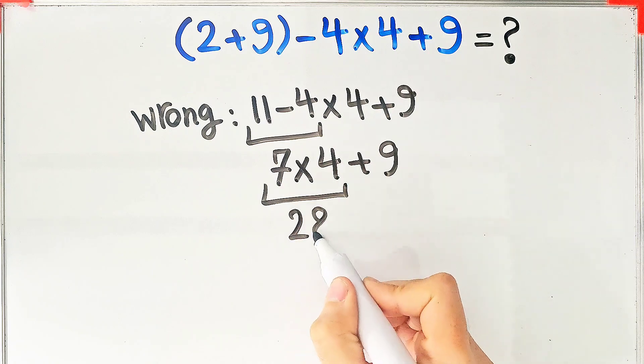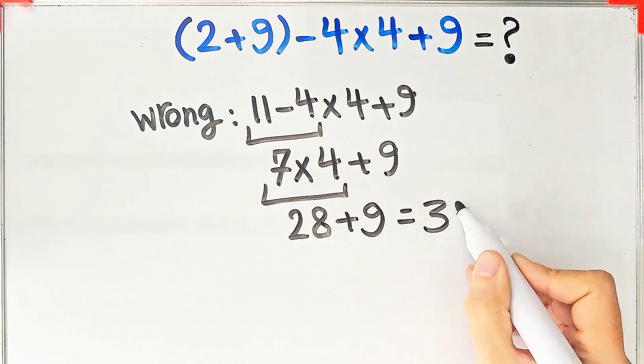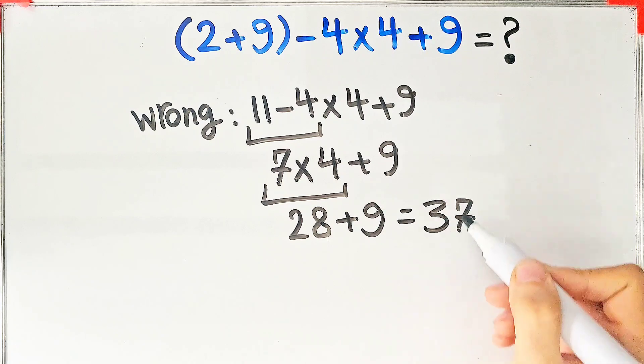7 times 4 equals 28, and 28 plus 9 equals 37. They say the final answer of this question equals 37, but this answer is definitely wrong.